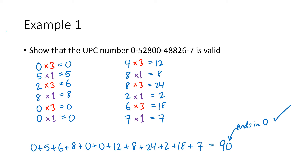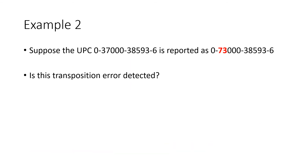It's a more complicated process than things we've seen before, but this system has some advantages. One advantage is that it can detect some errors that we weren't able to detect with systems from the previous section. Here we have a transposition error — the systems we talked about before were not able to detect transposition errors. We detect an error by trying to validate the new erroneous number, hoping that the check digit won't check out, because if it doesn't, we know something is wrong.